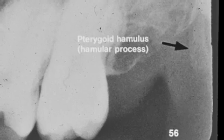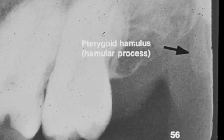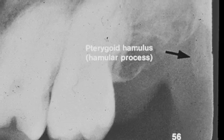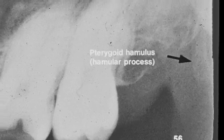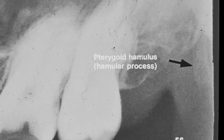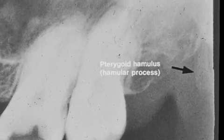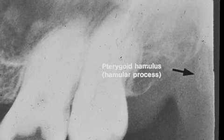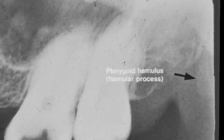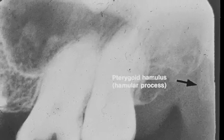Previously we saw the hamular process. This arrow points to the hamular process, an extension of the sphenoid bone. In the very upper part of the slide, at the end, you'll see a small radiopaque projection. This is the zygomatic process.